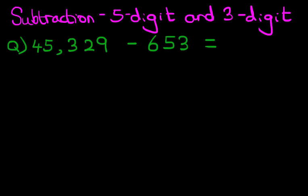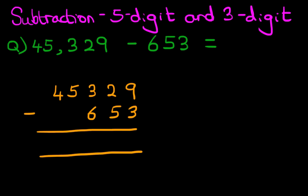Now the first stage is we're going to rewrite this question from the horizontal format into the vertical format. So let's do this. 45,329 - 653. Let's label the columns as well. We've got units, tens, hundreds, thousands, and ten thousands. So we've done stage one. We've rewritten the question into the vertical format.